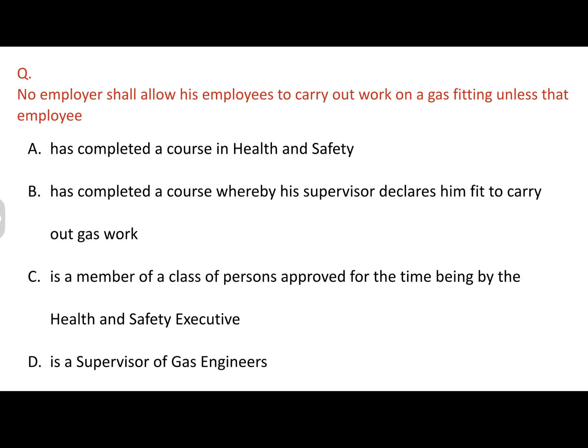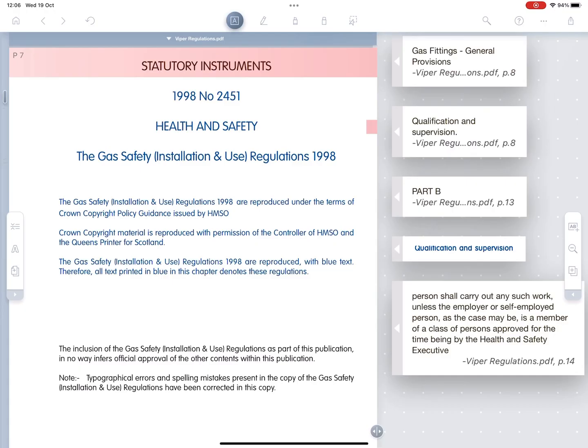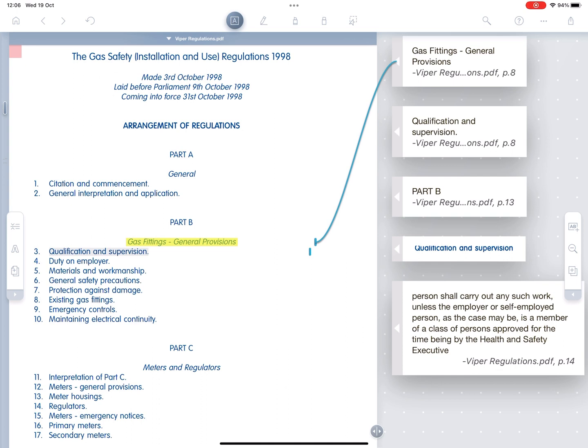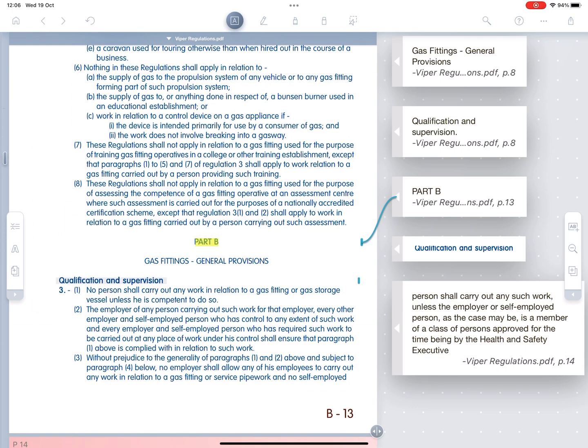So how does that all relate to exam questions? Here's a typical exam question: No employer shall allow his employees to carry out work on a gas fitting unless that employee, A, has completed a course in health and safety. B, has completed a course whereby his supervisor declares him fit to carry out gas work. C, is a member of a class of persons approved for the time being by the health and safety executive. Or D, is a supervisor of gas engineers. Well, we go back to the index again, and we look for something that looks like what we're looking for. And you'll find in part B, gas fittings, general provisions, a section saying qualification and supervision.